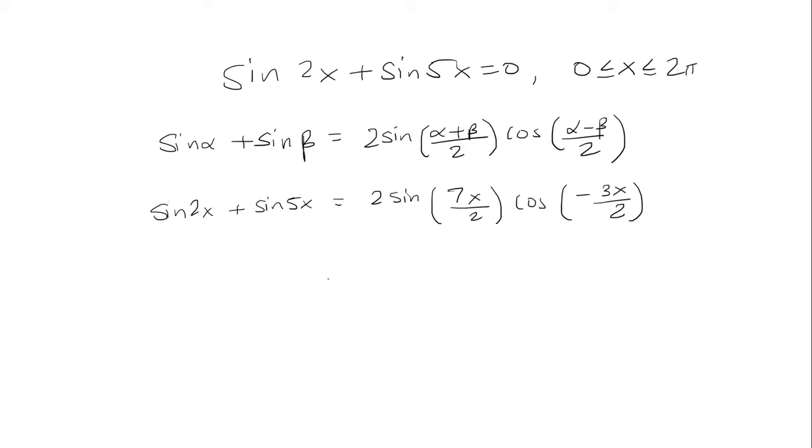What I could do is I can remove this negative because cosine is an even function. If I have cosine of negative x, that's the same thing as cosine of x. So that's going to be 2 sine 7x over 2 times cosine 3x over 2, and that's going to equal 0.